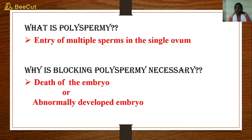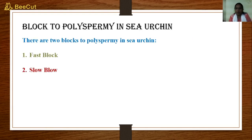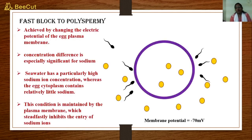Different species have evolved different mechanisms to block polyspermy. In sea urchin, there are two mechanisms: the first is the fast block to polyspermy, and the second is the slow block to polyspermy, also referred to as the cortical granule reaction.